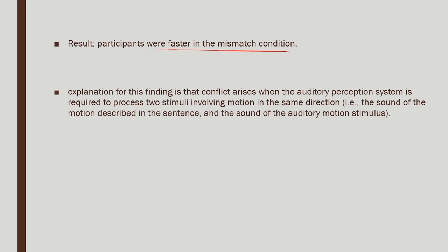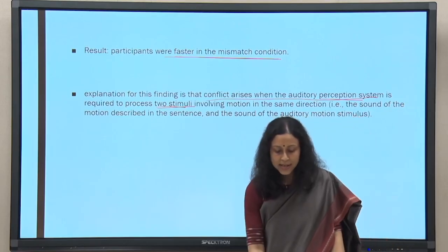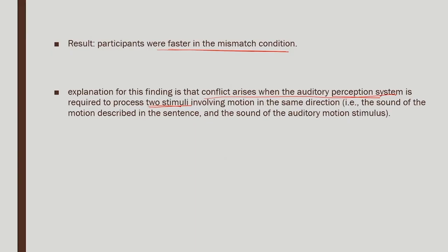The researchers' explanation for this finding is that conflict arises when the auditory perception system is required to process two stimuli at the same time. Both stimuli were given simultaneously — making the perceptual system busy with two different tasks at once. When that happens, there is a conflict seen in the reaction time. The sound of the motion described in the sentence and the sound of the auditory motion stimulus are in conflict because they both are using the same perceptual system.